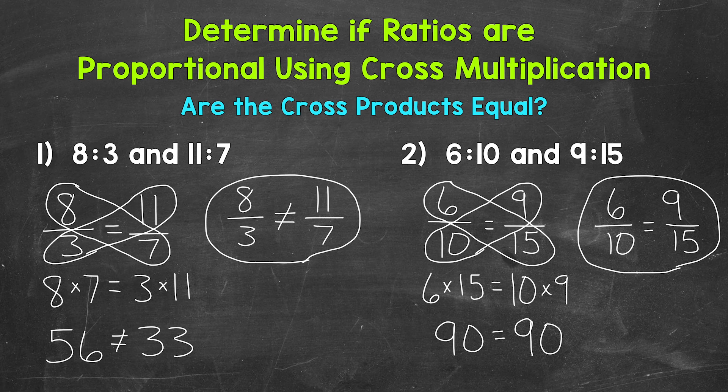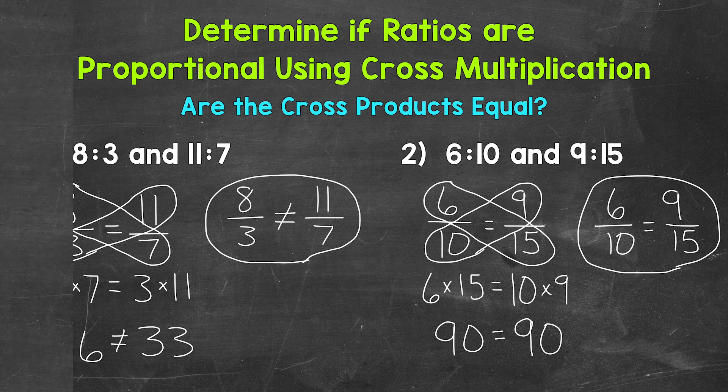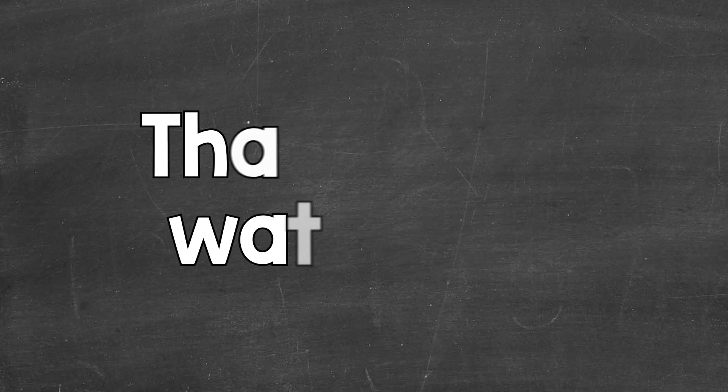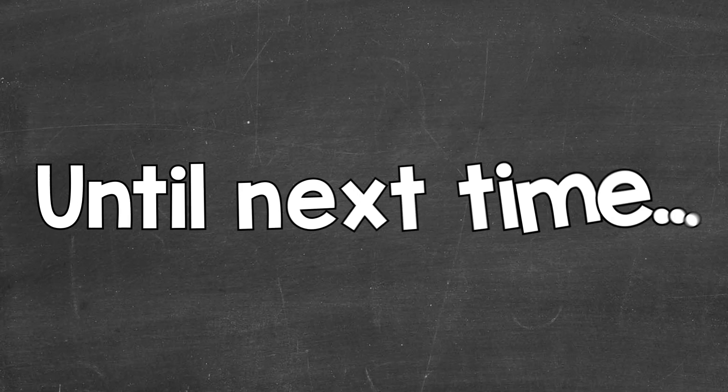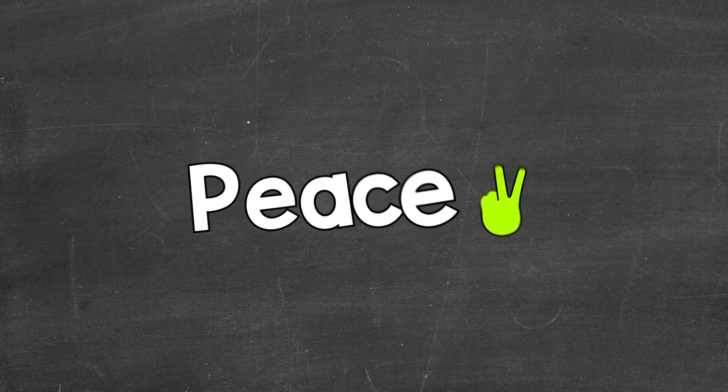So there you have it — that's how you determine if ratios are proportional using cross multiplication. Cross multiply: if the cross products are equal, the ratios are proportional; if the cross products are not equal, the ratios are not proportional. I hope that helped. Thanks so much for watching. Until next time, peace.